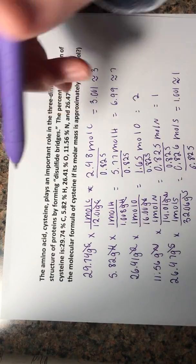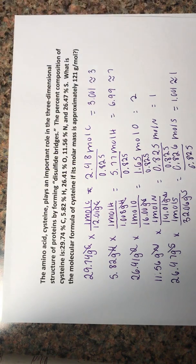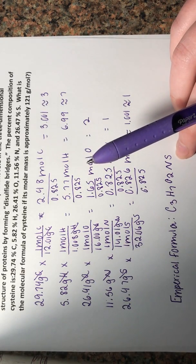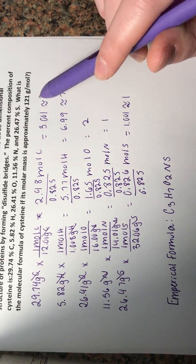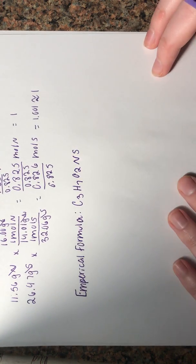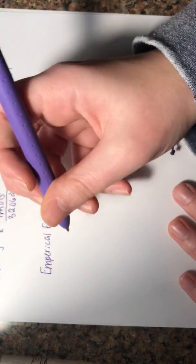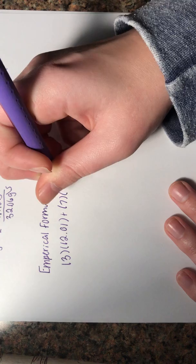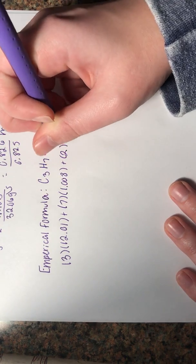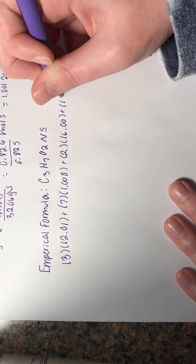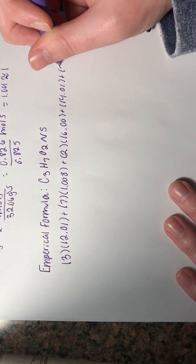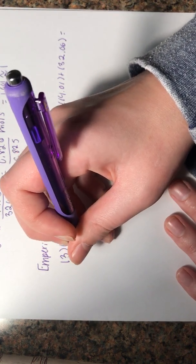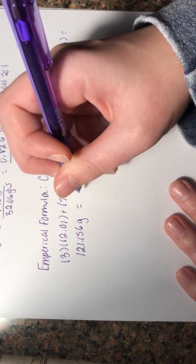Our problem asks for our molecular formula. So in order to do this, we need to find the empirical formula mass and divide that by the actual mass that was given. So we'll just find our mass by multiplying the subscripts by the atomic mass of the element. So we'll have 3 times 12.01 plus 7 times 1.008 plus 2 times 16.00 plus 14.01 plus 32.06. So all of this is going to be equal to, without significant figures, 121.156 grams. So with significant figures will be 121.